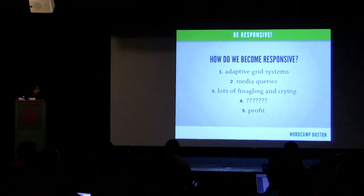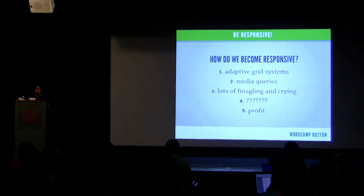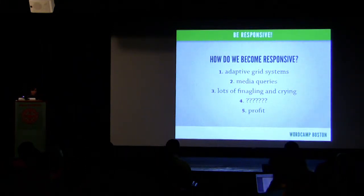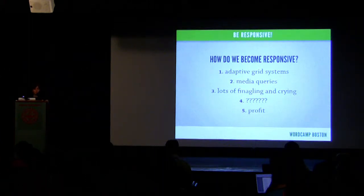So how do we become responsive? What are the ways that we can take our current theme and make it adapt and change across devices so our content really shines through? We need adaptive grid systems, media queries, and flexible images — those are the two big things, plus flexible images.